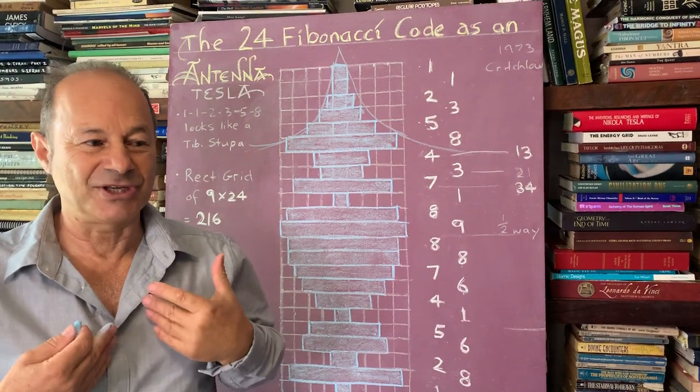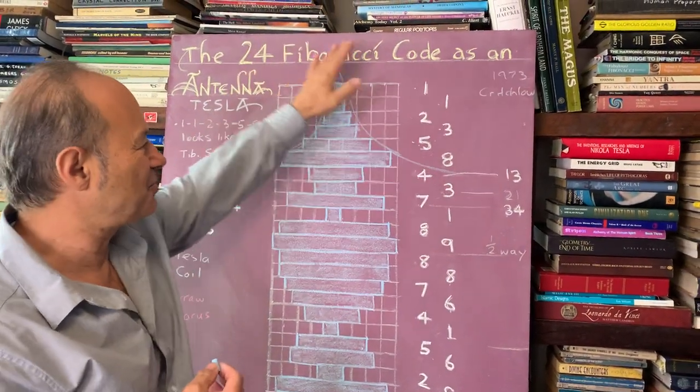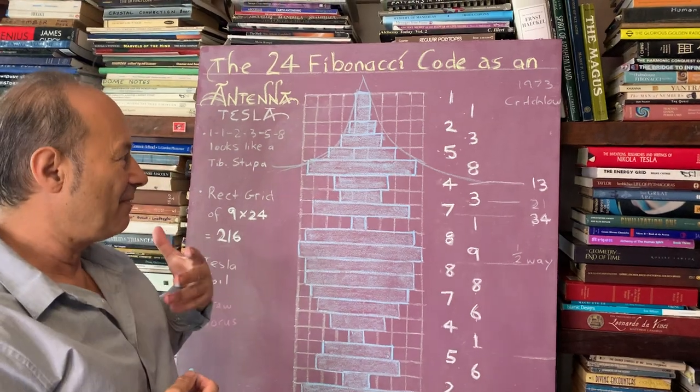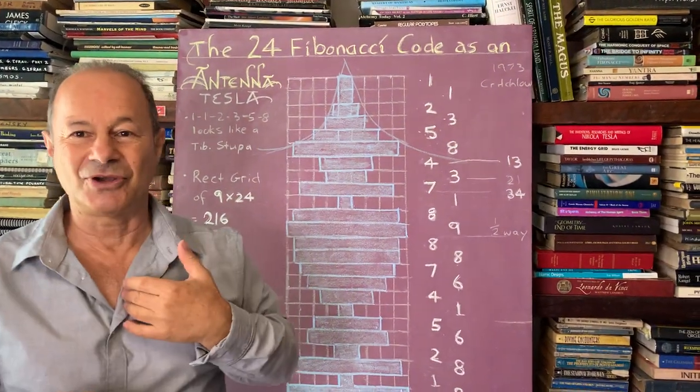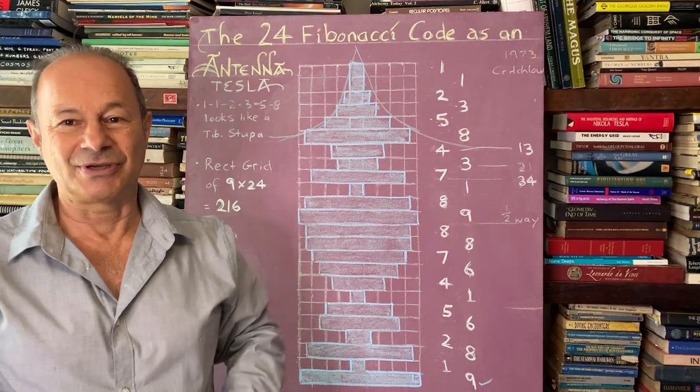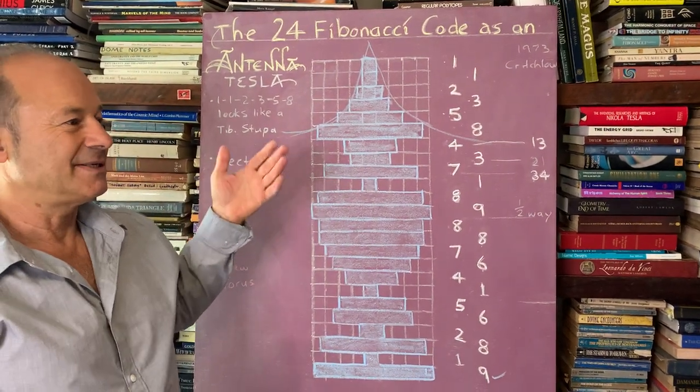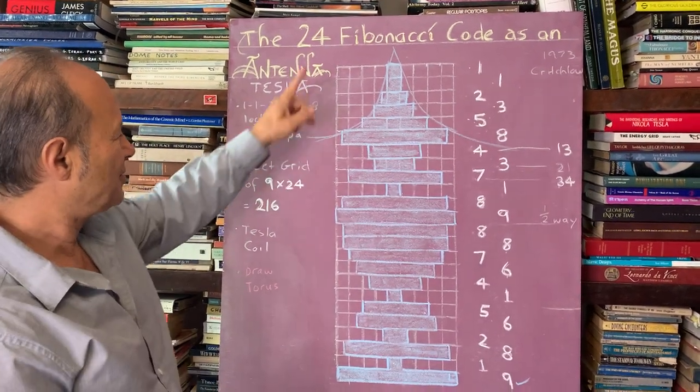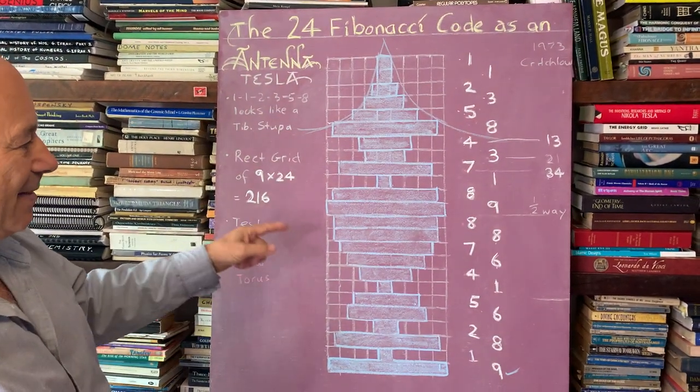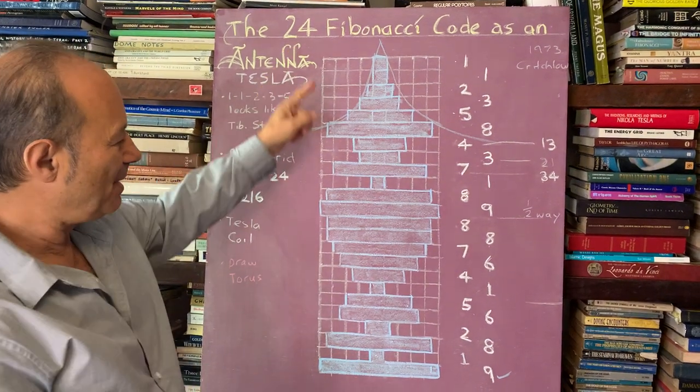It's because we are this ratio. When we see a Tibetan stupa, we're kind of jaw dropped or amazed because it's a reflection of our own internal harmonies and symmetry. That's why we love this sacred architecture, or it looks like a Japanese pagoda as well.